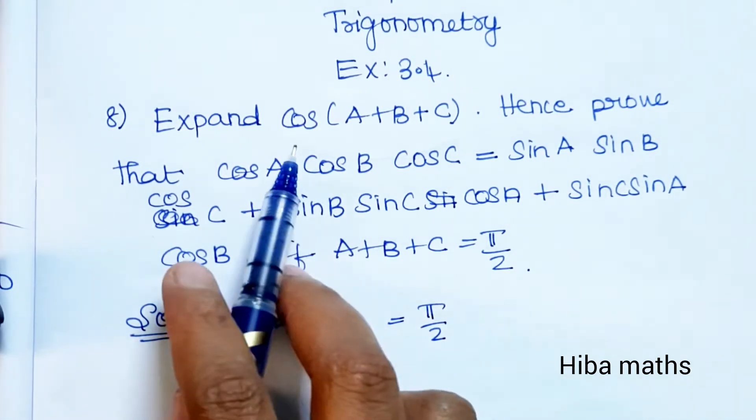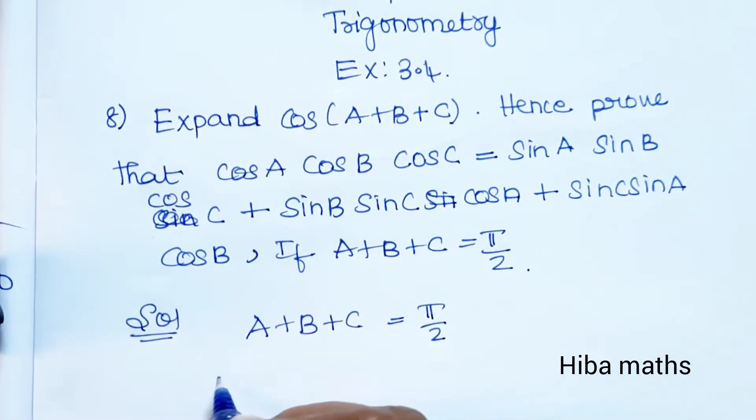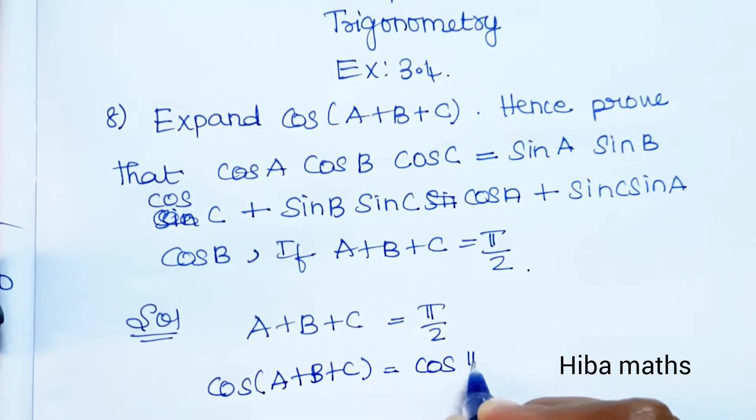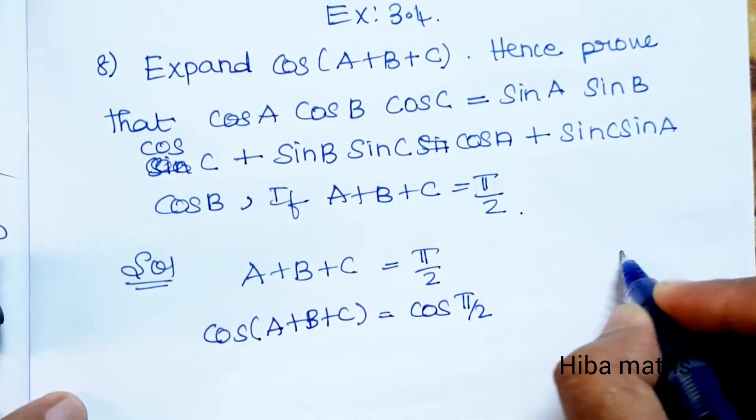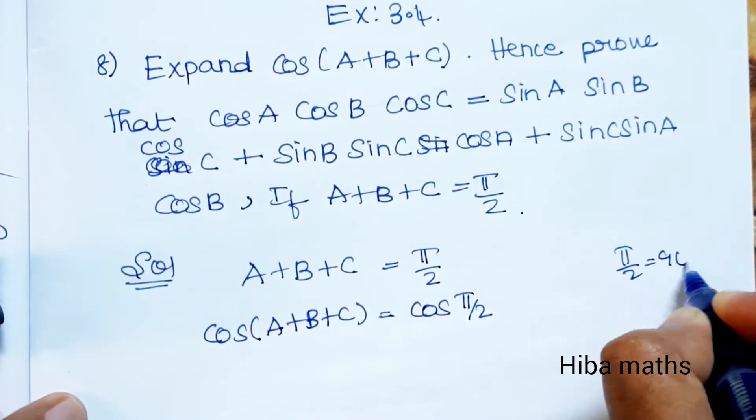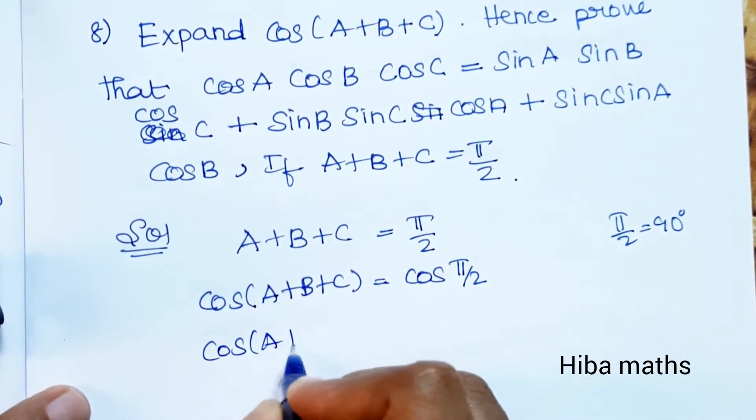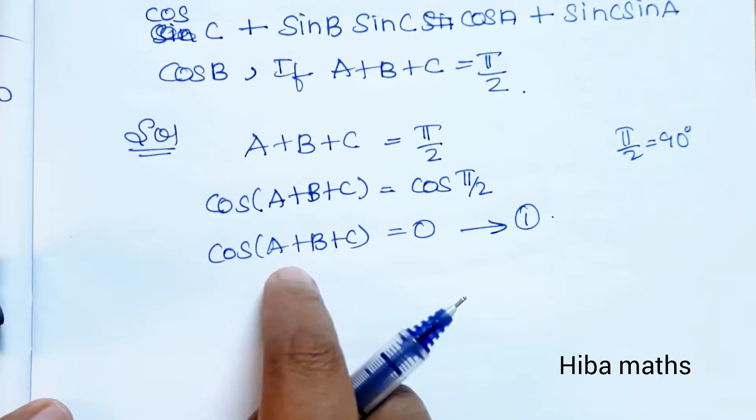π/2 value is 90 degrees. Cos 90 degrees value is 0. It is the first result. In this case, cos(A+B+C) is equal to 0.